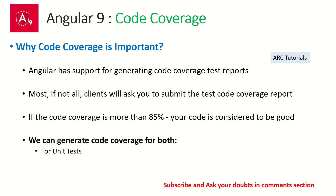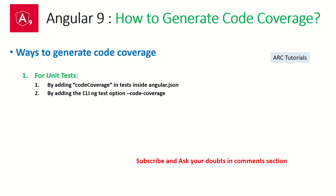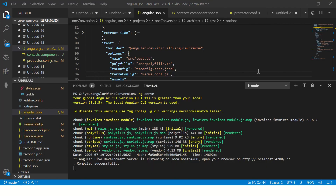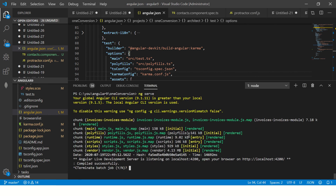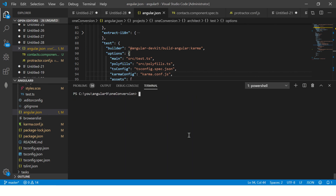There are two ways to generate unit test code coverage. One is to add it inside the angular.json file itself, and the other is to pass it as a command-line parameter. Let's see both in action — I'll open the browser and cancel the running application first.